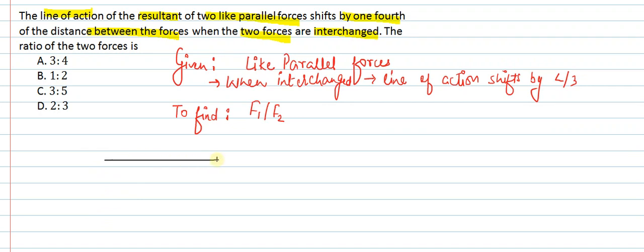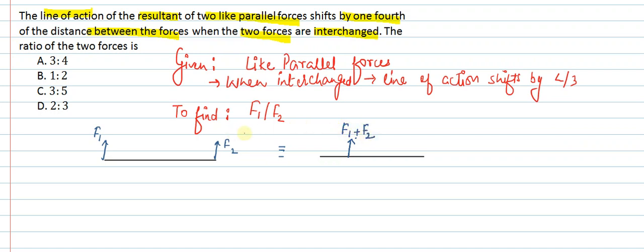We have two forces applied like this — F1 and F2. If we replace both with a single equivalent force, it would be placed somewhere on the same line equal to their sum. We assume F1 is greater than F2. The line of action is at distance X1 initially. In the second condition, when we interchange the forces, the resultant shifts to position X2.